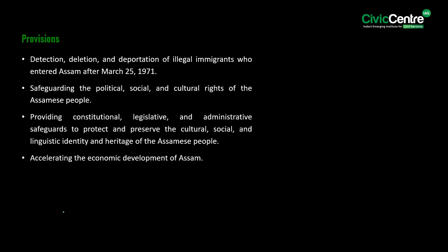The main provisions of the Assam Accord include: firstly, detection, deletion and deportation of illegal migrants who entered Assam after 25th March 1971; secondly, safeguarding the political, social and cultural rights of the Assamese people; thirdly, providing constitutional, legislative and administrative safeguards to protect and preserve the culture, social and linguistic identity and heritage of the Assamese people; and lastly, accelerating the economic development of Assam.